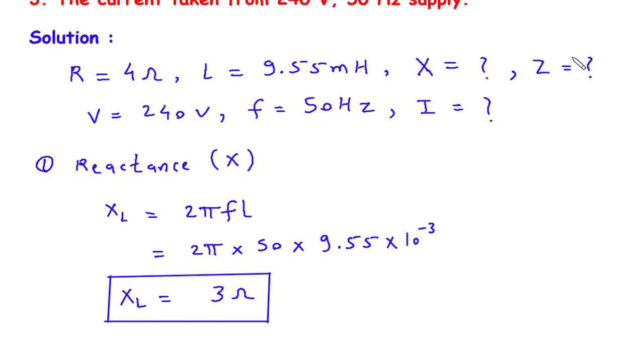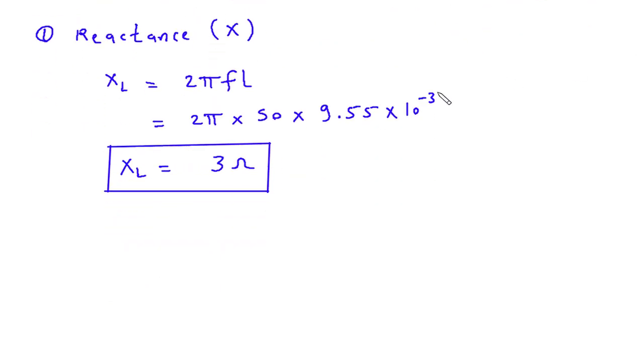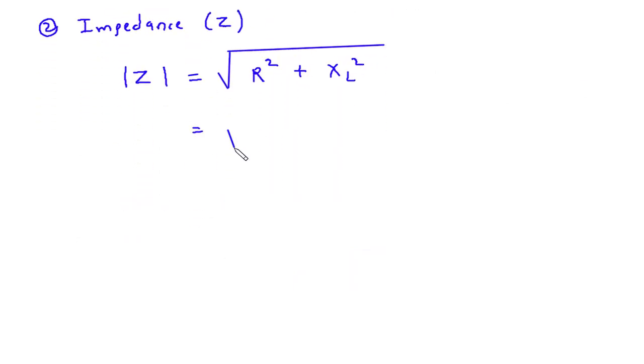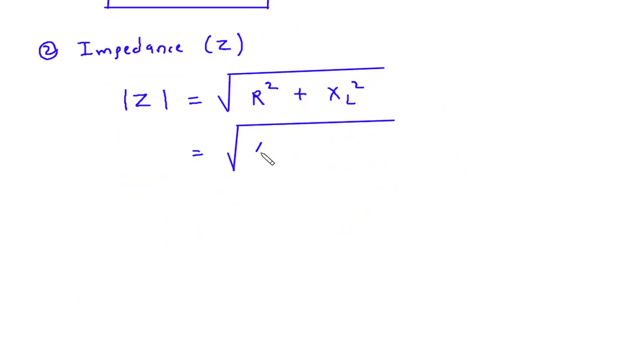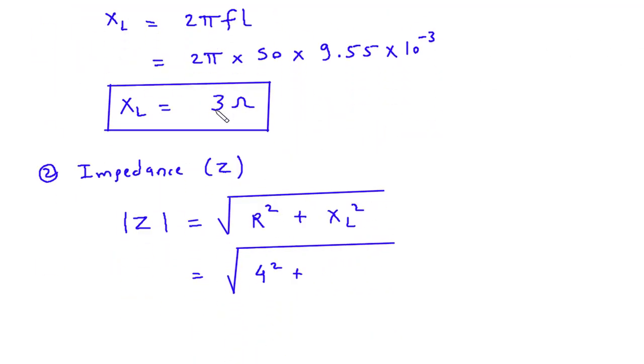Then next we have to calculate Z, that is impedance. Magnitude of Z is equal to square root of R square plus XL square. So this will be square root of 4 square plus 3 square.